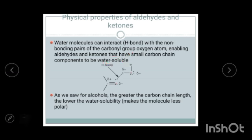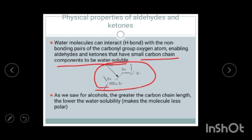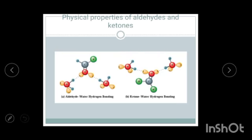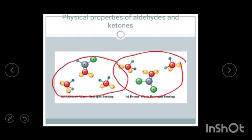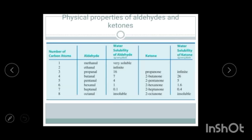Aldehydes and ketones are soluble in water when they have a small carbon chain, because water can form hydrogen bonds with the carbonyl group of the aldehyde or ketone. As you can see, they have the ability to form intermolecular hydrogen bonds with water, which is why they are water soluble. However, as the length of the carbon chain increases, the solubility decreases.